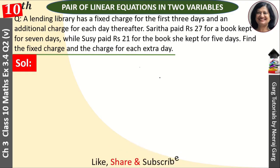A lending library has a fixed charge for the first three days and an additional charge for each day thereafter. Sarita paid rupees 27 for a book kept for 7 days while she paid rupees 21 for the book she kept for 5 days. Find the fixed charges and the charge for each extra day.